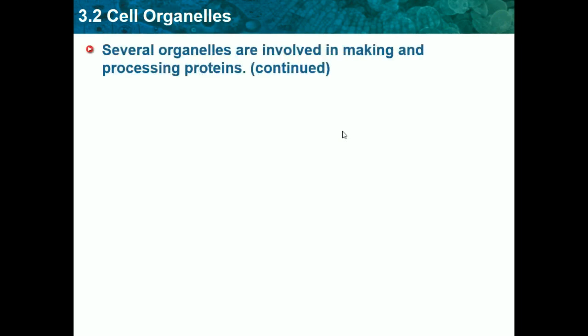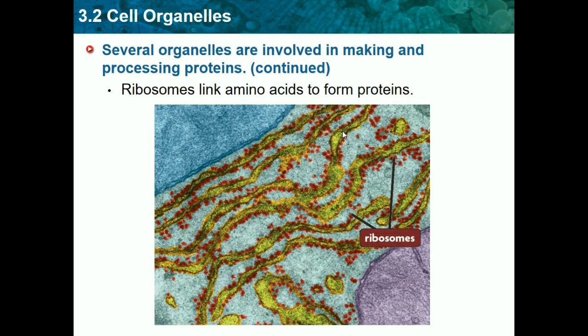Ribosomes, which live in the rough ER, link amino acids to form proteins. As we learned in a previous video on carbon-based molecules, amino acids are the monomers of proteins, and ribosomes link them together using peptide bonds.